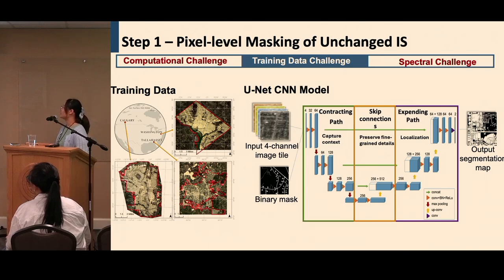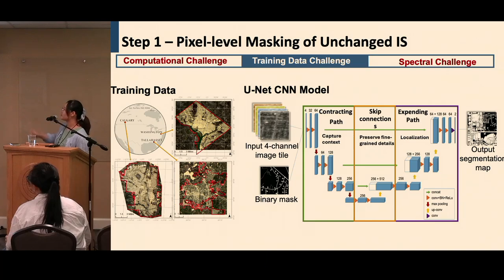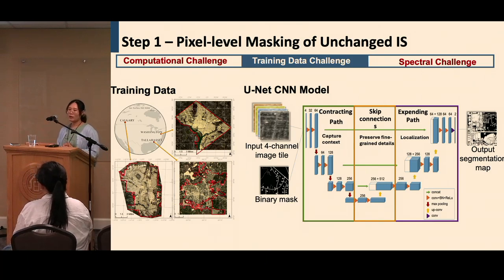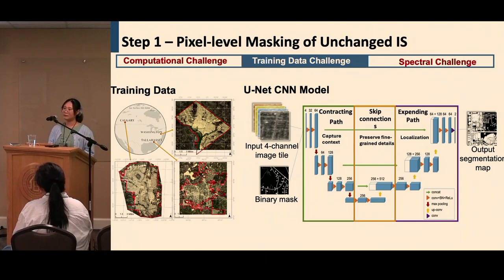The first step is pixel-level masking of unchanged impervious surface. We generated our training data from three cities — Washington, Tallahassee, and Calgary — and used the U-Net model to perform image segmentation. This pixel-level segmentation produces a binary mask where each pixel is classified as either impervious surface or non-impervious surface, completing the masking step for unchanged impervious surface.